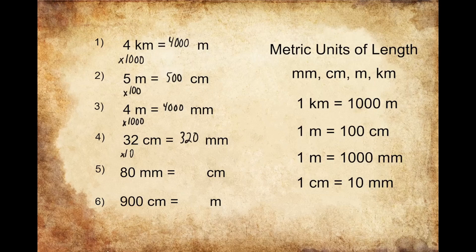For question number five, we're being asked to convert 80 millimeters into centimeters. One centimeter is equal to 10 millimeters, so in order to convert 80 millimeters into centimeters, I need to figure out how many groups of 10 I can make out of 80. I'm going to divide 80 by 10, which gives me 8, because I can make 8 equal groups of 10 out of 80. So 80 millimeters converts to 8 centimeters.